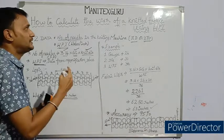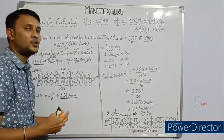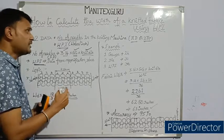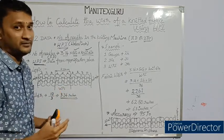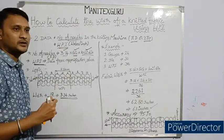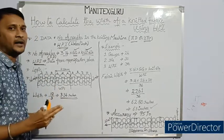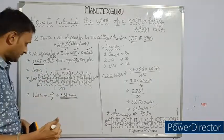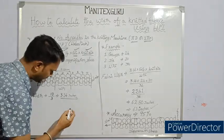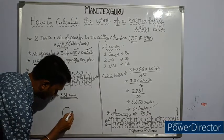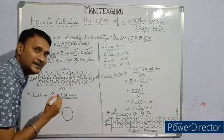Before understanding the concept, we need to understand the logic behind how we can calculate the width by using the wales per inch. By understanding the logic, we can keep the concept in mind for a longer run. Let's understand the logic first. Let us consider a miniature cylinder with 10 needles.